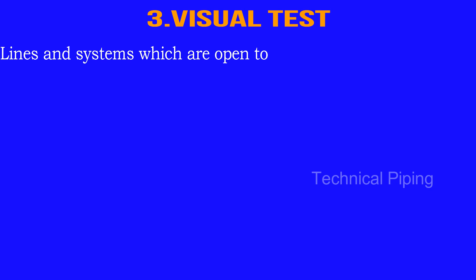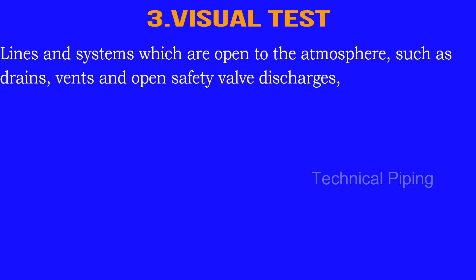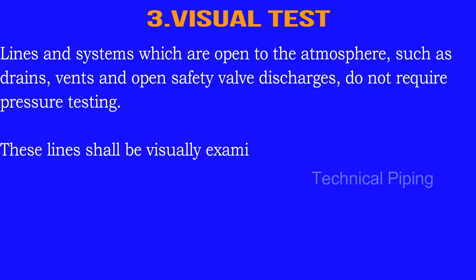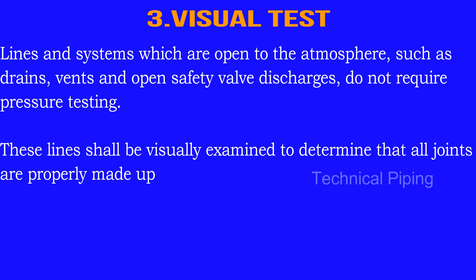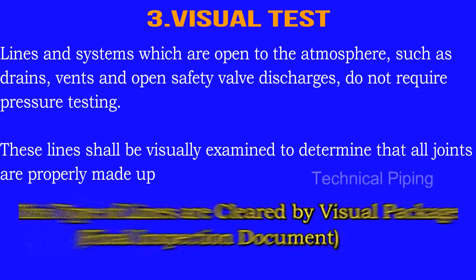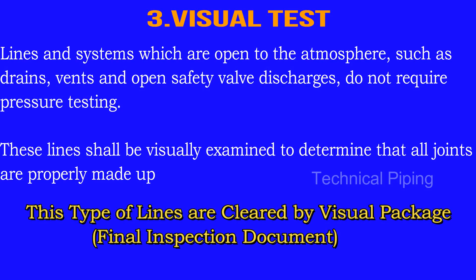Number 3: Visual Test. Lines and systems which are open to the atmosphere, such as drains, vents, and open safety valve discharges, do not require pressure testing. These lines shall be visually examined to determine that all joints are properly made up. This type of lines are cleared by a visual package final inspection document, based on project owner requirements.